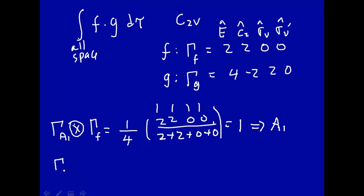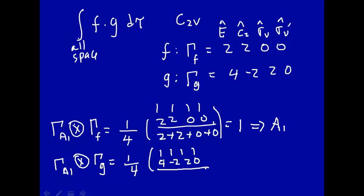Let's do the same thing for function g — project out how many A1's there are in its reducible representation. That's 1/4 times: A1 characters 1, 1, 1, 1 multiplied by g's representation 4, −2, 2, 0. Summing: 4 − 2 + 2 + 0 = 4, divided by 4 equals 1. So this implies there is A1 symmetry within function g as well. Since both f and g contain A1 symmetry, their product will contain A1, and this integral does not have to be zero.